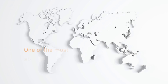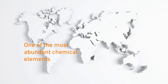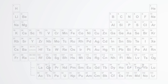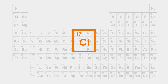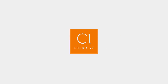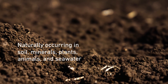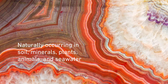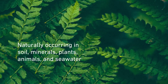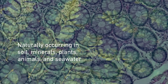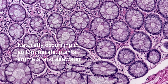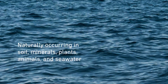Chlorine. It's one of the most abundant chemical elements on Earth. It occurs naturally in soil, minerals, plants, animals, and seawater.